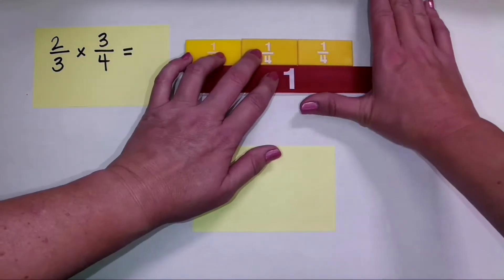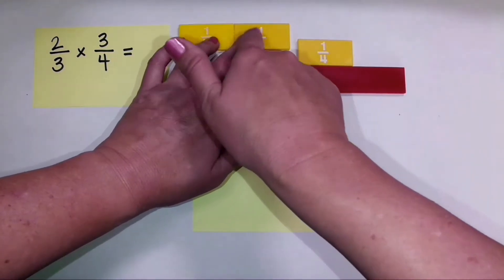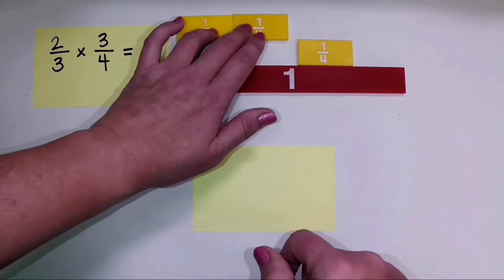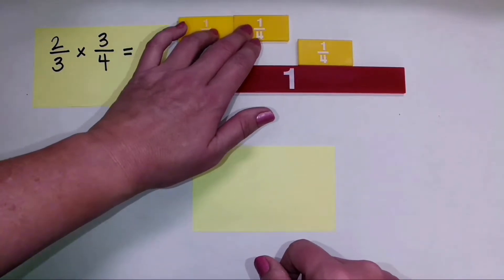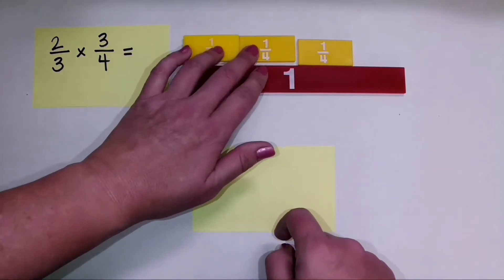2 of these 3 pieces right here would be these 2 right here. And so what's under my fingers? I have 2 one fourth pieces. So 2 thirds of 3 fourths is 2 fourths.